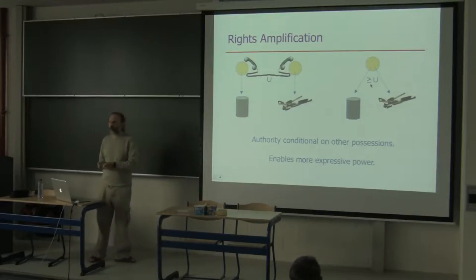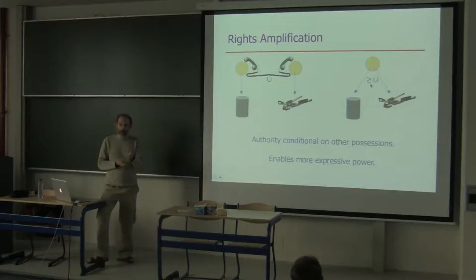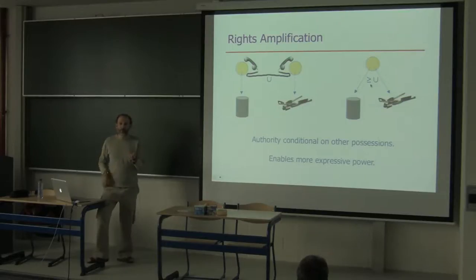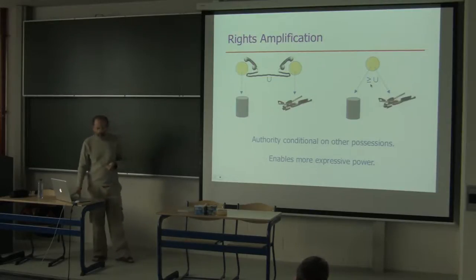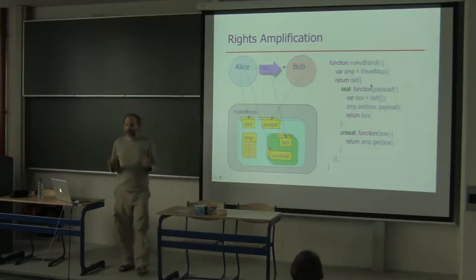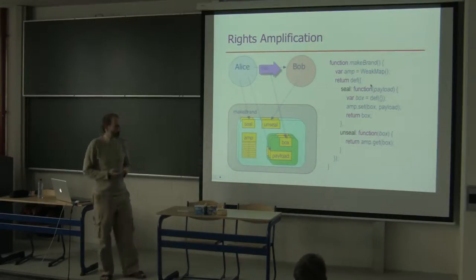This raises our expressive power substantially. It allows Alice, for example, to give Bob a can where the amount of authority she has granted Bob depends on what other possessions Bob has. If Bob has the can opener, Alice has effectively given him the tuna. If Bob does not have the can opener, Alice has only enabled Bob to enable somebody else who does have the can opener to get the tuna. These rights amplification patterns actually happen very easily through normal object-oriented programming patterns.